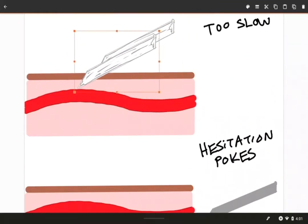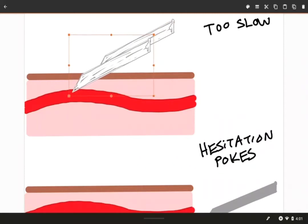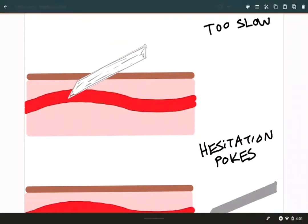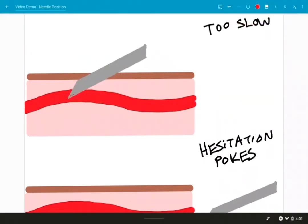And it's not just the pain. If you are going really slowly, you're increasing the amounts of time that the bevel is partially in the vein and partially outside of it. So that entire time that the bevel is not completely inside the vein, you have a risk of creating a hematoma.